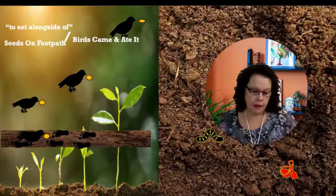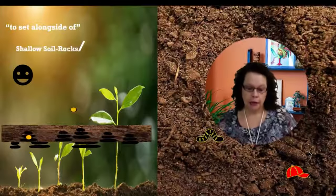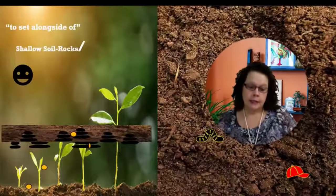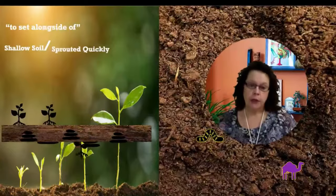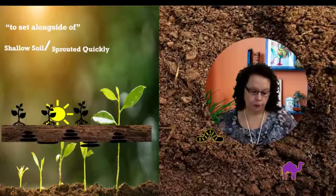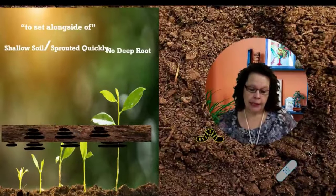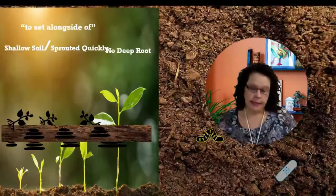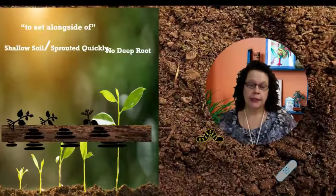Other seed fell on shallow soil with underlying rock. The seed sprouted quickly because the soil was shallow, but the plant soon wilted under the hot sun. And since it didn't have deep roots, it died.